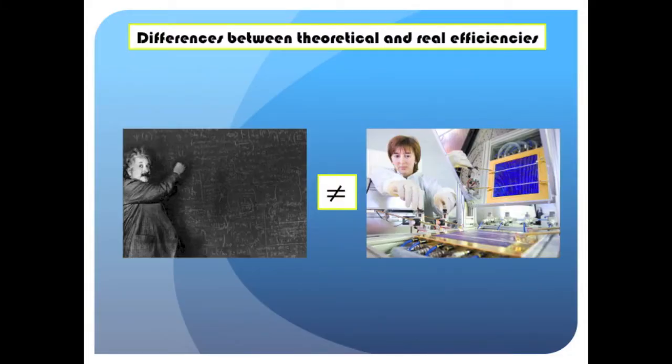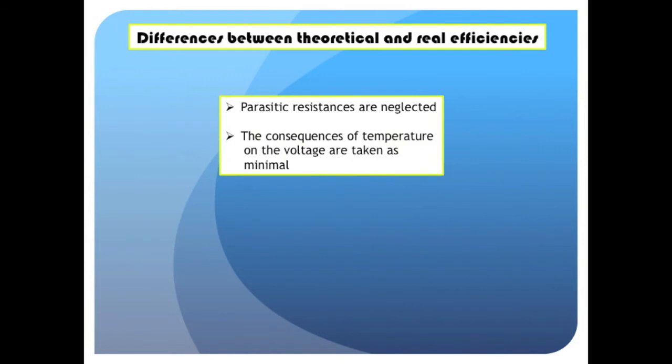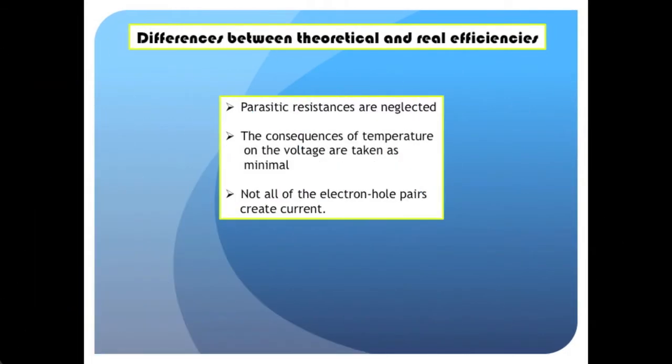Let's have a little more explanation. There are several factors that appear in reality which are not considered in the theoretical efficiency. First of all, the parasites' resistances are neglected. Also, the effect of the temperature on the voltage is taken as minimal, which means that the power observed in practical will be deployed lowered. And finally, the theoretical efficiency is calculated with the hypothesis that each electron-hole pair creates current, but it's not true, because there isn't enough electrodes. We can't cover all the surface of a solar panel with electrodes since they reflect light.